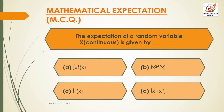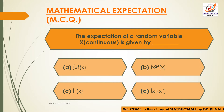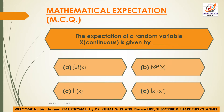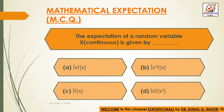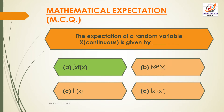The expectation of a random variable x that is continuous is given by: Option A — integral x f(x); Option B — integral x square into f(x); Option C — integral f(x); Option D — integral x into f(x). The answer is Option A: integral x into f(x). The expectation of a continuous random variable x is given by the integral of x into f(x).